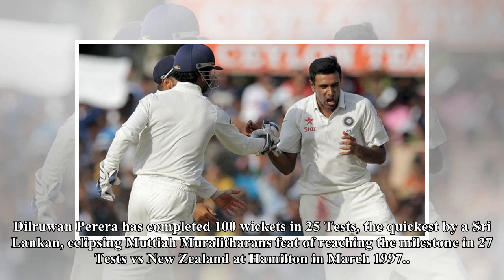Dilruwan Perera has completed 100 wickets in 25 tests, the quickest by a Sri Lankan, eclipsing Muttiah Muralitharan's feat of reaching the milestone in 27 tests versus New Zealand at Hamilton in March 1997.